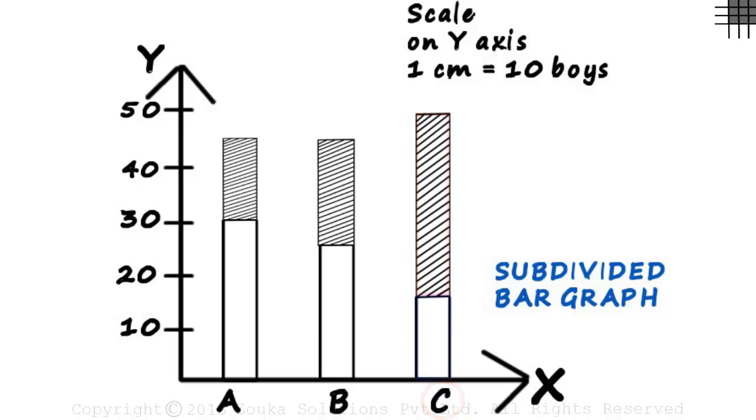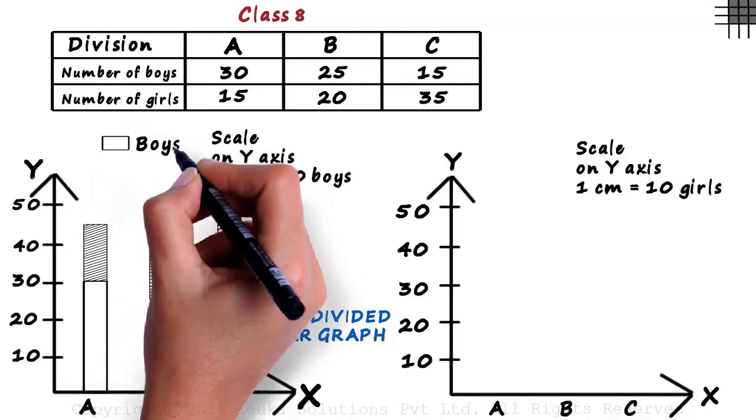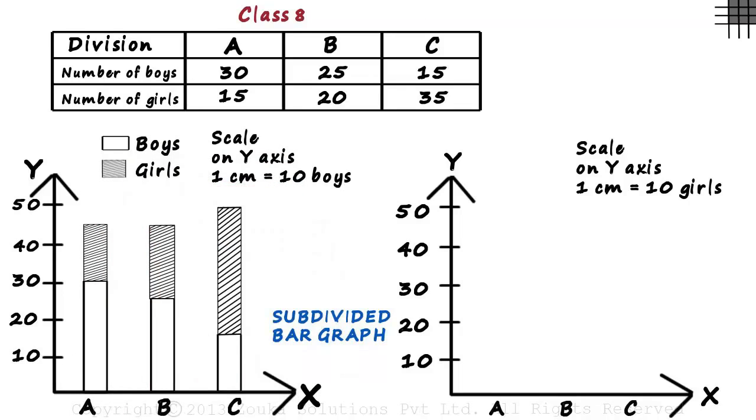Which is why in a subdivided bar graph, it is always important to write the legend. The unshaded bars represent the boys and the shaded bars represent the girls. So these were the basic concepts about the subdivided bar graph. But how do we actually construct it? We will see that next.